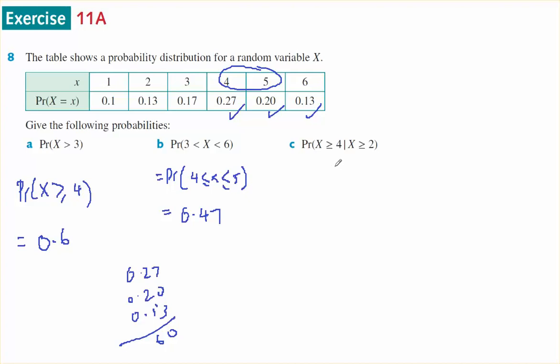And the probability that X is bigger than 4, given that it's bigger than 2, I can use the A given B rule, which is the probability of A intersect B over the probability of B.